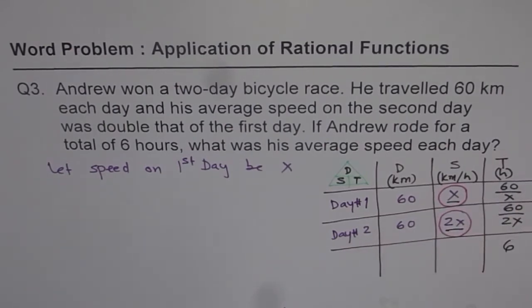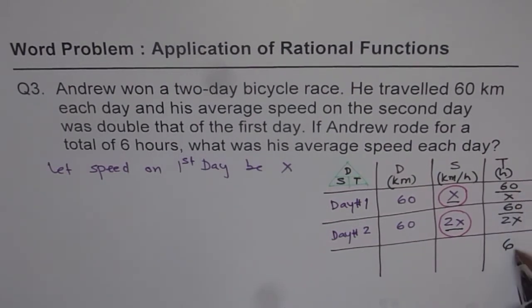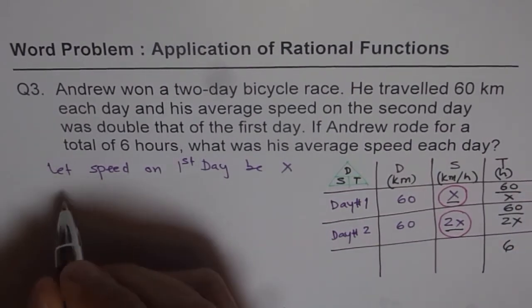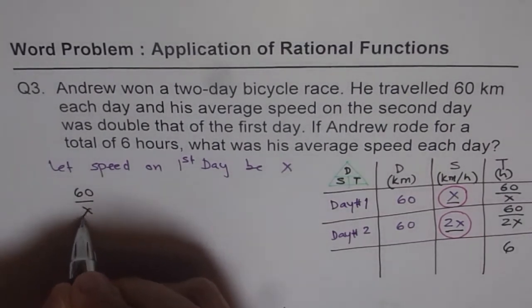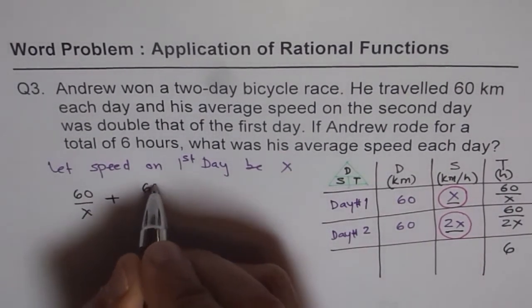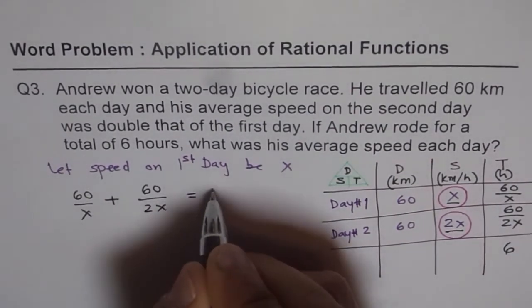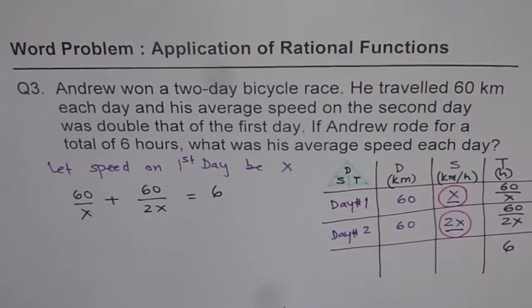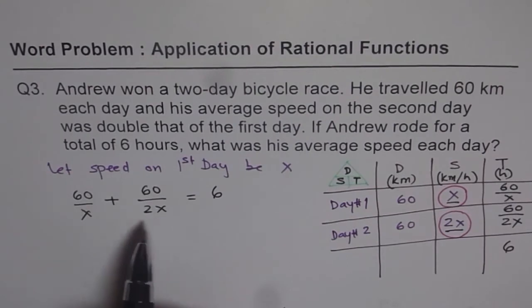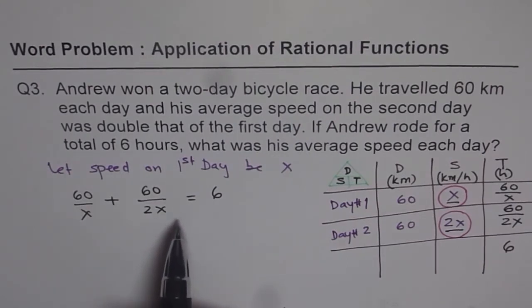So let's get back to the equation. As you can see from the table, absolutely clear, total time is 6. That means 60 over x plus 60 over 2x is equal to 6. Now this is a rational function, kind of simplest of all the rational functions, and you can very easily solve it.